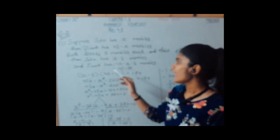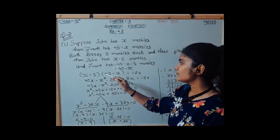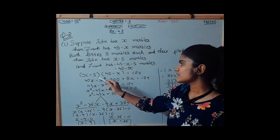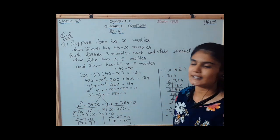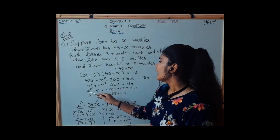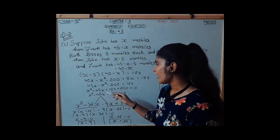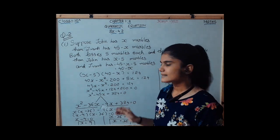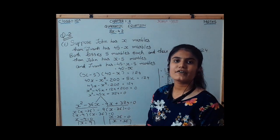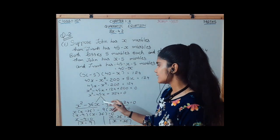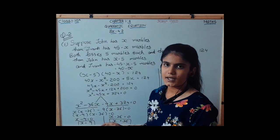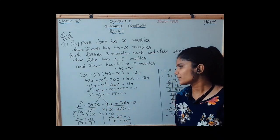After losing 5 marbles, John has x minus 5 marbles and Jivanti has 40 minus x marbles. Multiplying these, x minus 5 into 40 minus x equals 124. We get the quadratic equation x squared minus 45x plus 324 equals 0. We now split the middle term minus 45x using the factorization method.